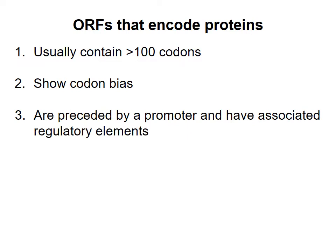Third, for an mRNA to be transcribed, there must be a promoter nearby, and it may be possible to identify elements on the DNA that will regulate transcription initiation. In general, promoters in bacteria are more regular and easier to find than promoters in eukaryotes.